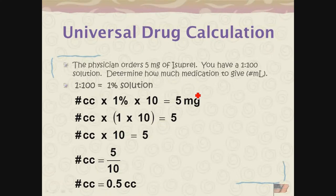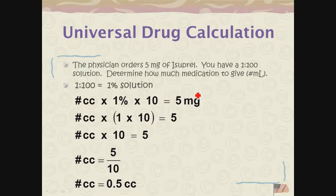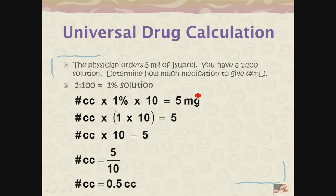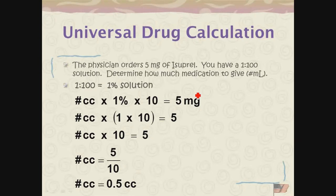Both answers come out the same, depending upon what you feel comfortable with. The weight-volume relationship makes sense for some people — setting it up as two ratios and doing the math. For most, the universal drug calculation is the more comfortable route. Both will give you the same answer, and you can do both ways to double-check.